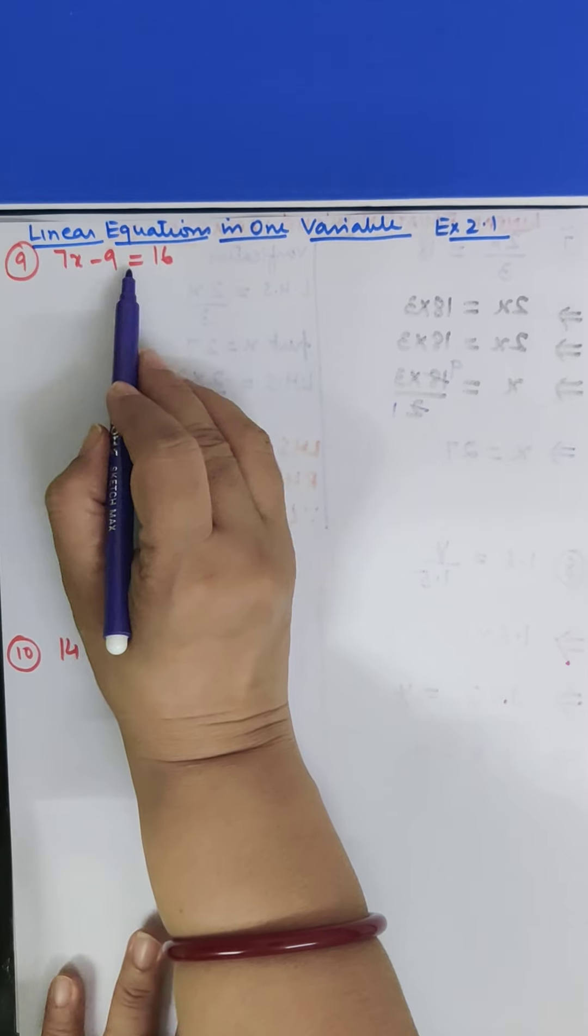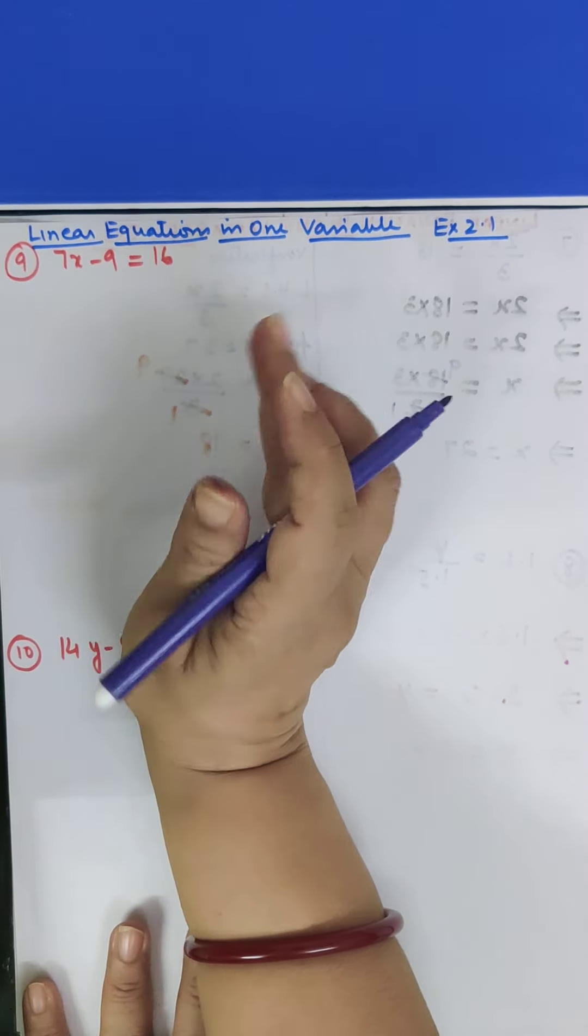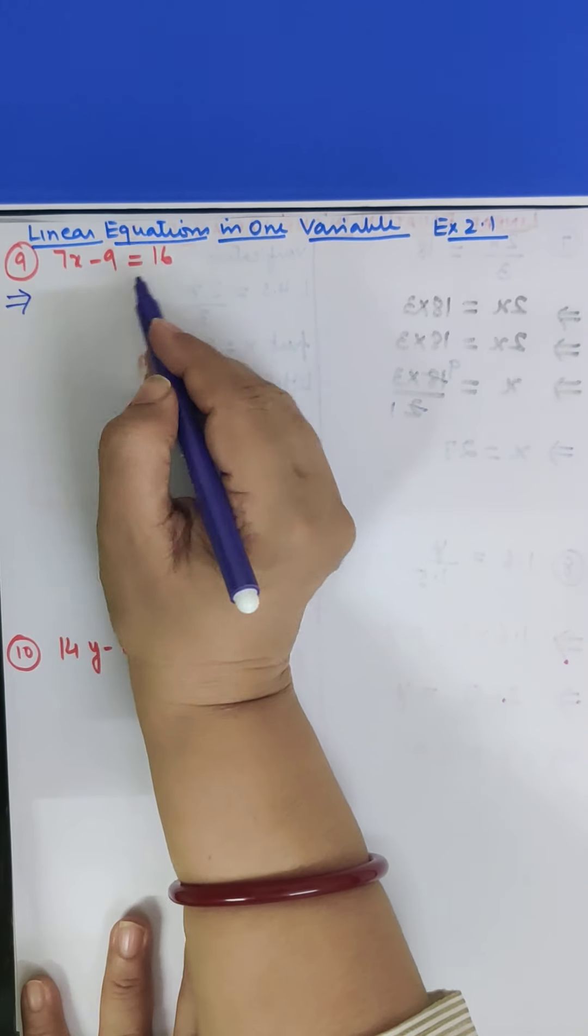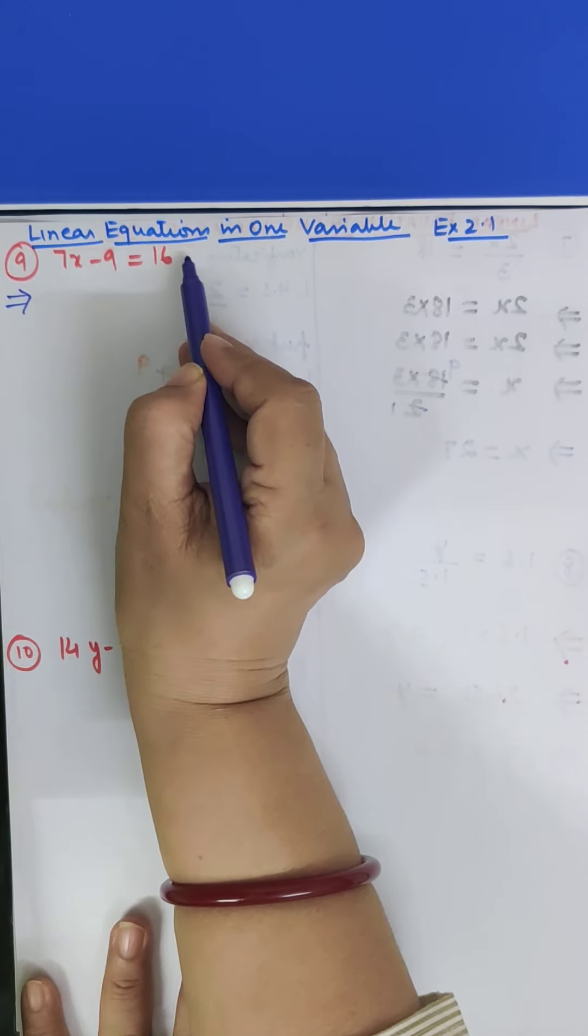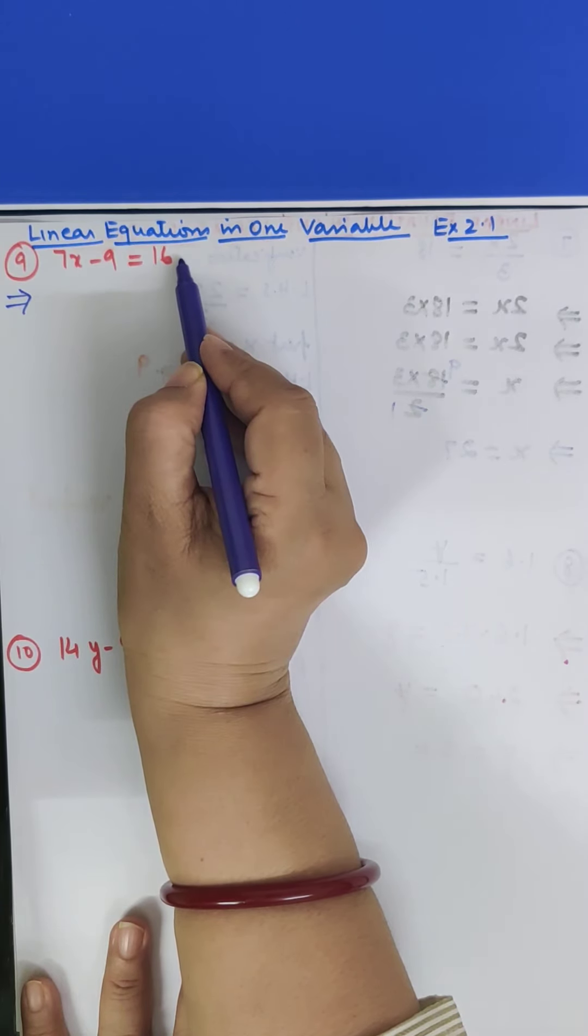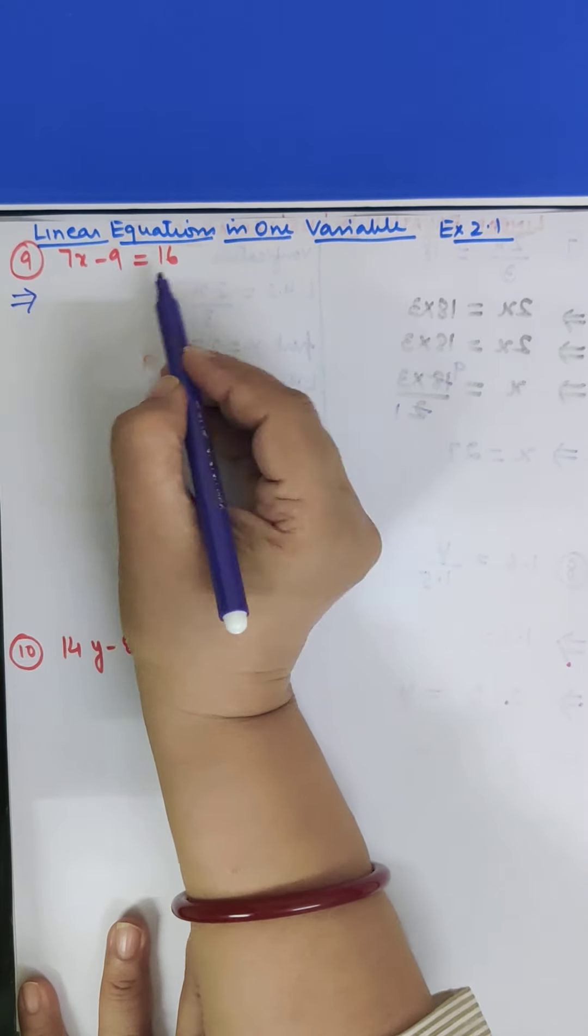Question number 9 is 7x minus 9 is equal to 16. Now, what we do? We shift 9 to this side. Minus 9, when you shift to this side, it becomes plus 9. Side changes, sign changes.